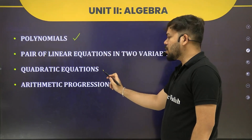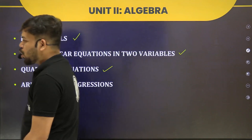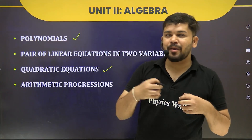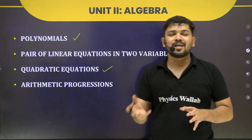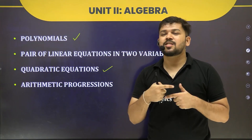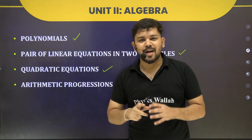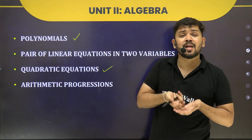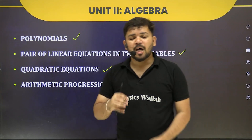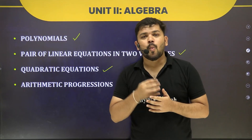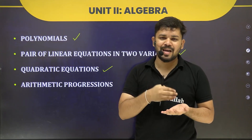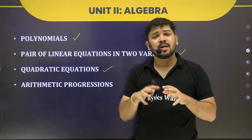Next is Quadratic Equations. When you set a polynomial equal to zero, it becomes an equation. Quadratic means the degree of the polynomial is two. We will see how to calculate the roots of a quadratic equation and the nature of roots — whether they are equal or unequal, real or non-real, or imaginary.